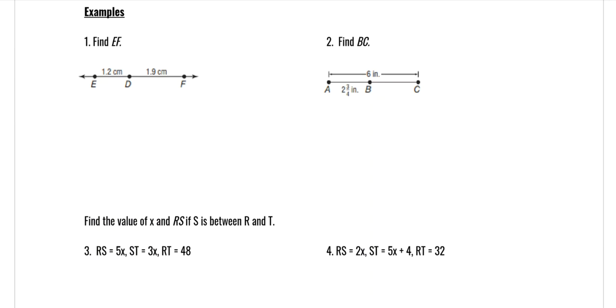So EF. Well, EF is made up of ED plus DF. That's equal to EF. And just so that you can see what I'm doing, ED is 1.2 plus DF is 1.9 is equal to EF, which means that EF is 3.1 and we need to use our units, which is centimeters.